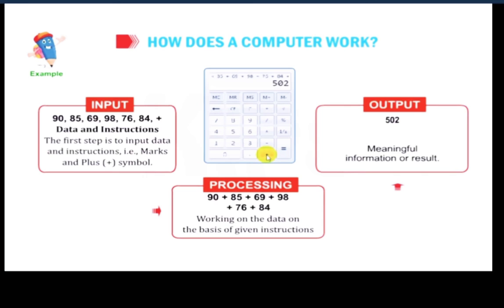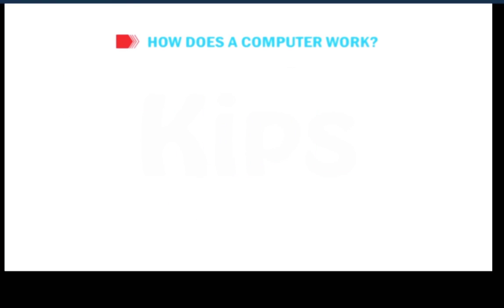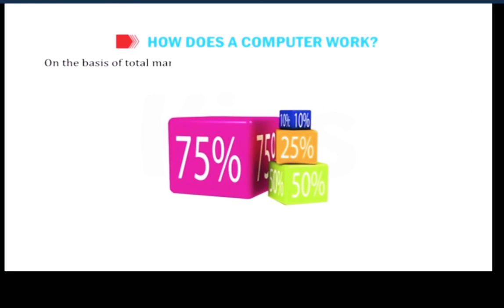The output will come 502. Meaningful information or result is called output. On the basis of total marks obtained, the teacher calculates the percentage of the students and finds his or her position in the class.